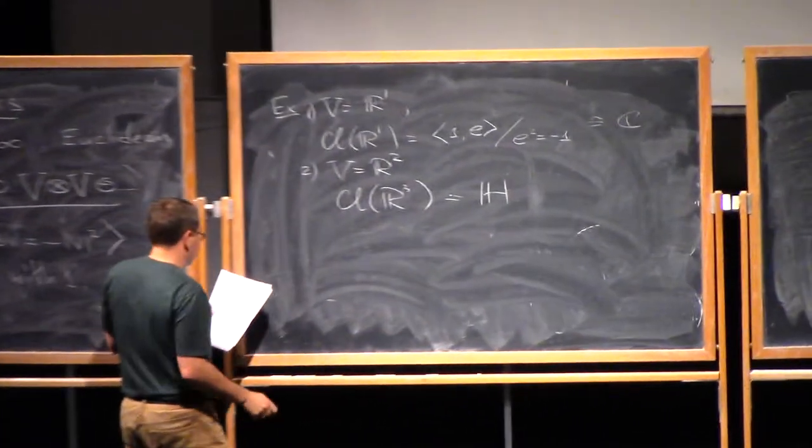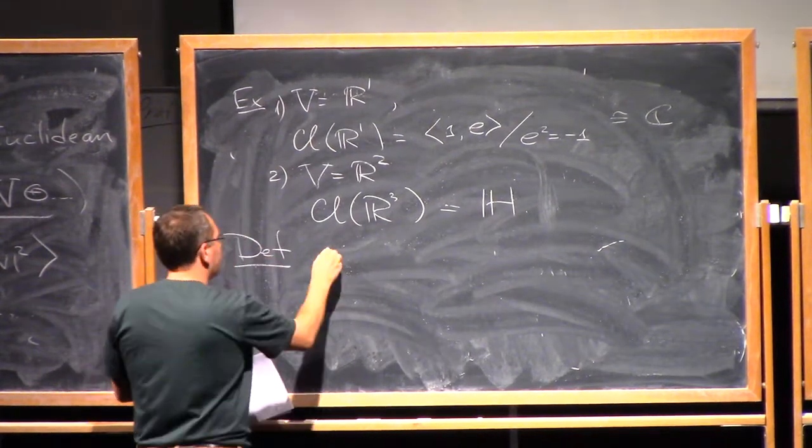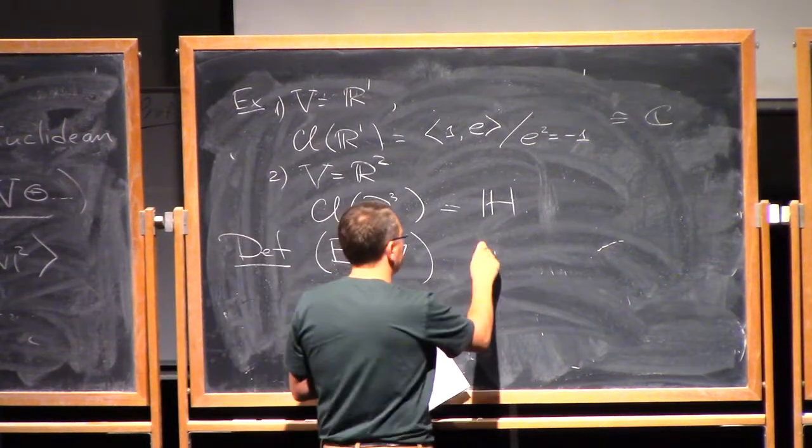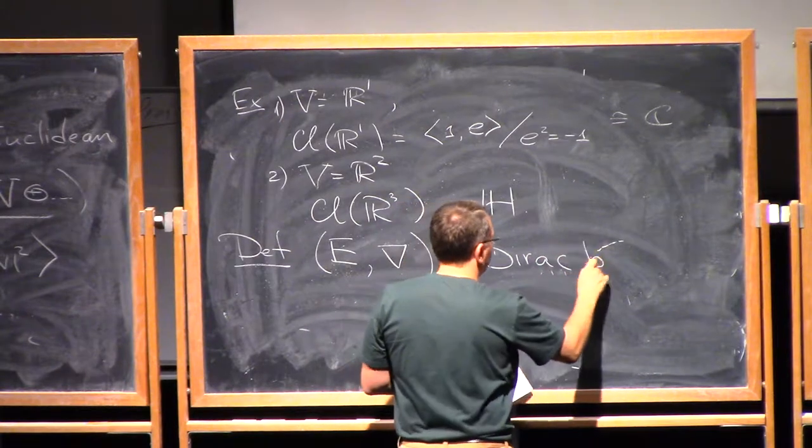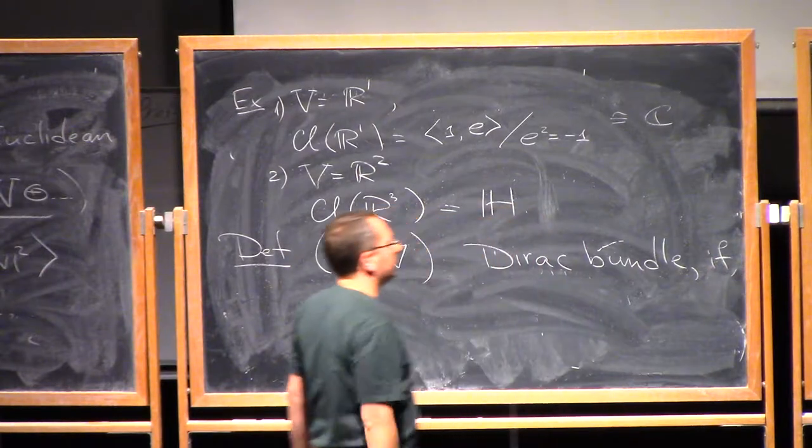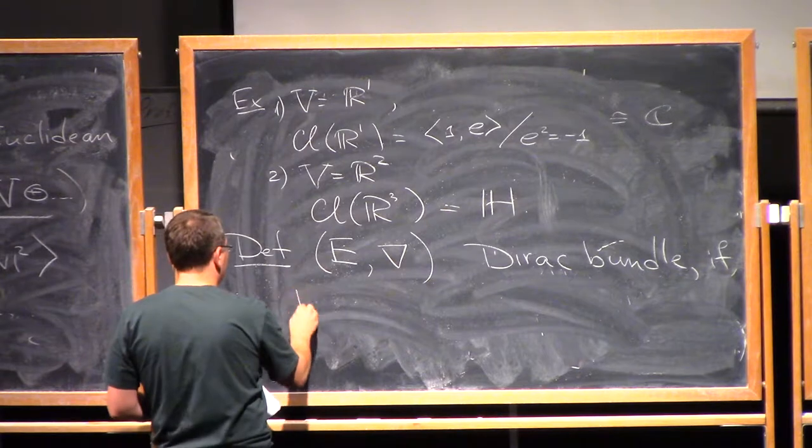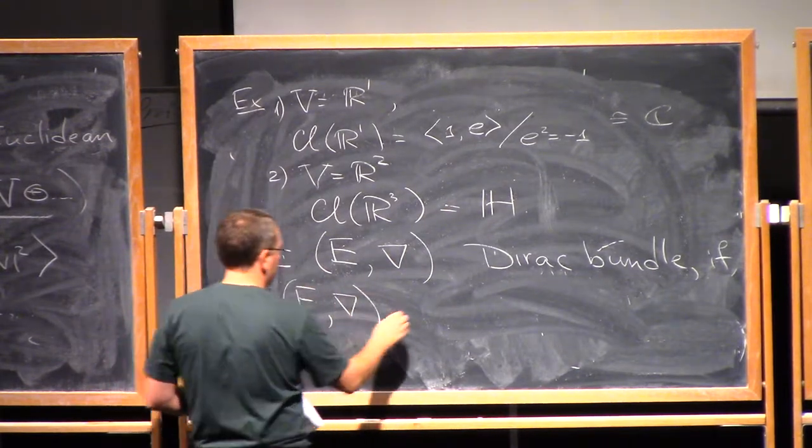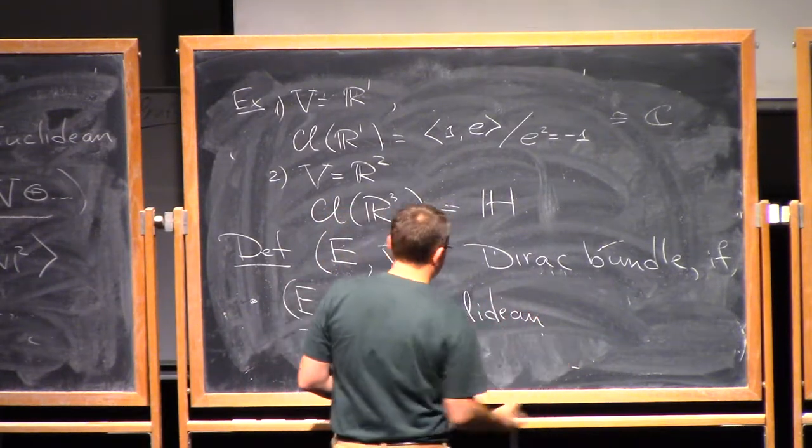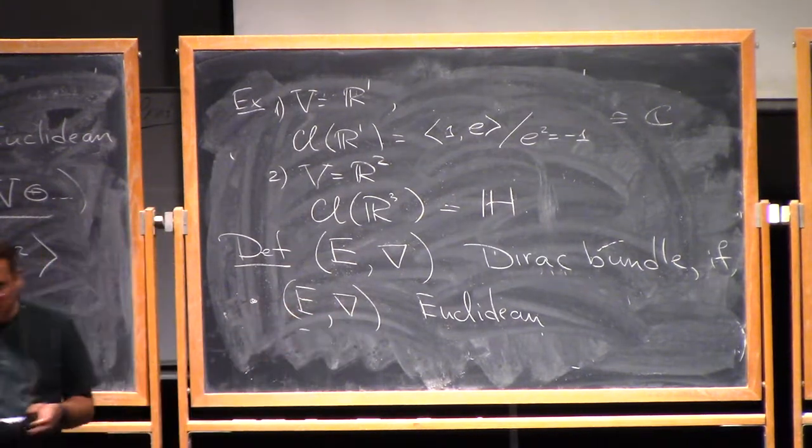Okay, with this at hand, I will use the following definition. So a vector bundle E, equipped with a connection A, is called a Dirac bundle. If the following conditions satisfy. So first of all, that is I have a scalar product on each fiber of E, and NABLA respects the scalar product.